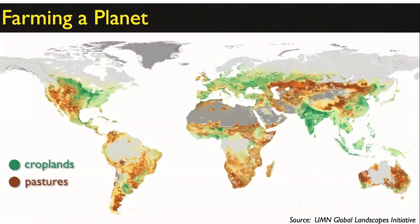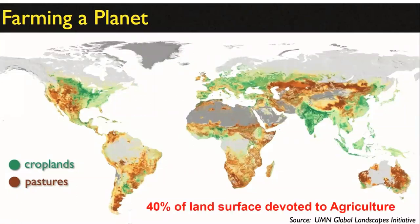This slide, 'Farming a Planet,' shows an approximation of how much of the planet is croplands and pastures — approximately 40% of the land surface is devoted to agriculture. That is a large percentage of our planet. You can see the distribution here between pastures for grazing animals and croplands for crops that we are directly growing.